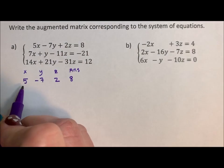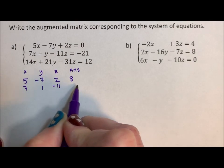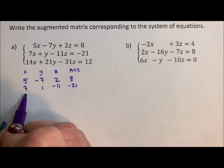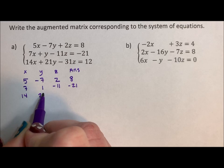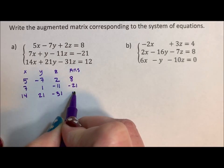For the next, we have 7x, 1y, negative 11z equals negative 21, 14x, 21y, negative 31z equals 12.